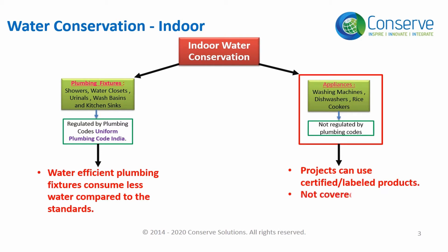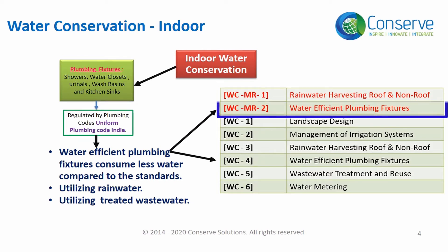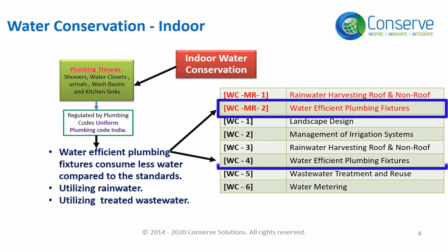Labeling or certification for appliances is provided by government agencies. In India, it is governed by the Bureau of Energy Efficiency. The IGBC rating system does not address water efficiency in appliances; it addresses water conservation in plumbing fixtures. The IGBC rating system for new construction has a mandatory requirement WC MR2 — Water Efficient Plumbing Fixtures — and a credit WC4 — Water Efficient Plumbing Fixtures.